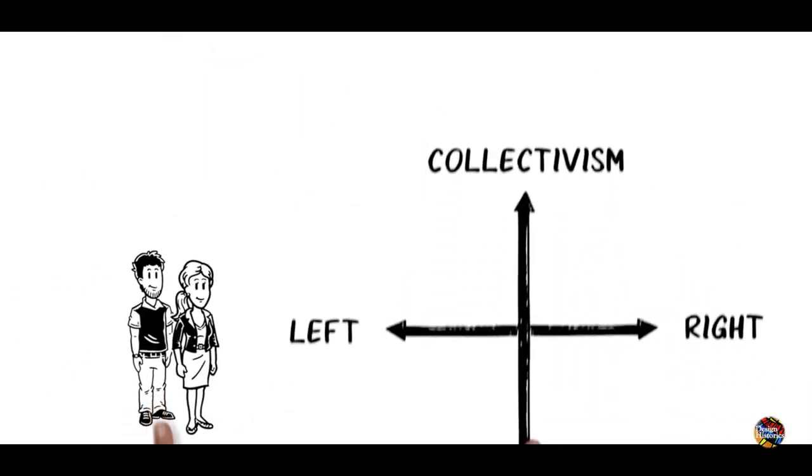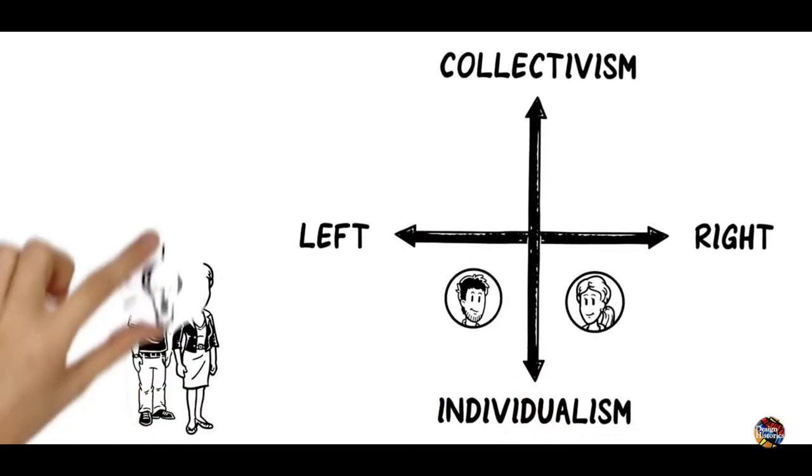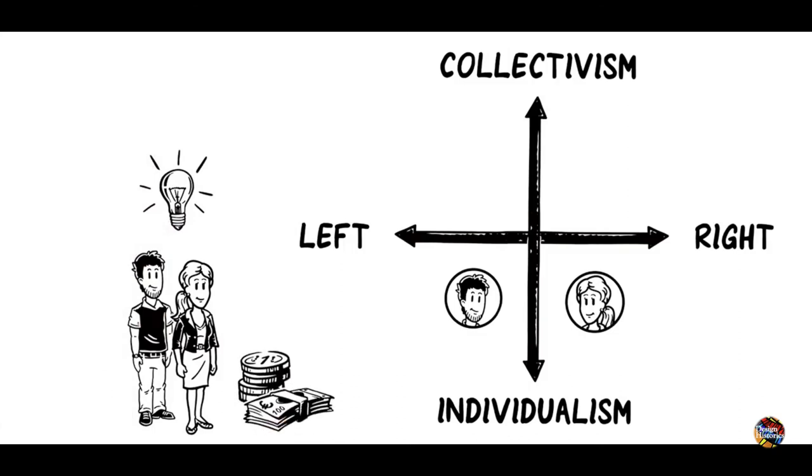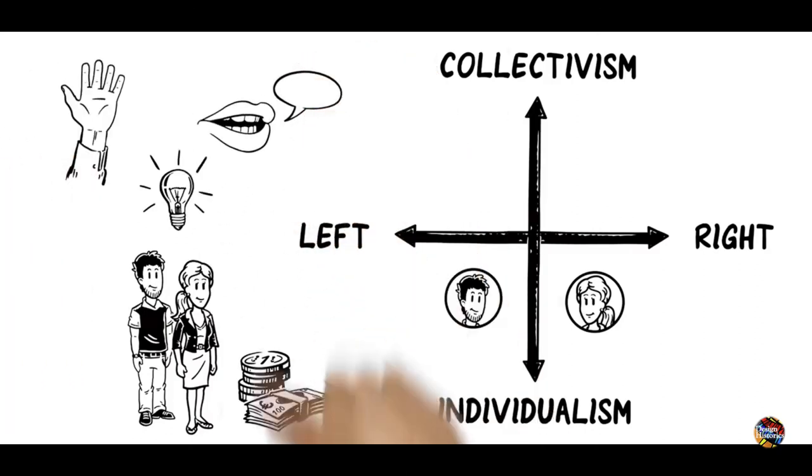When Paul's and Lina's political beliefs are plotted on the spectrum, they see that although they have some very different ideas about the economy, they are both firmly in the bottom half, which means they respect each other's individual rights like freedom of speech and are opposed to totalitarian ideologies like communism and Nazism.